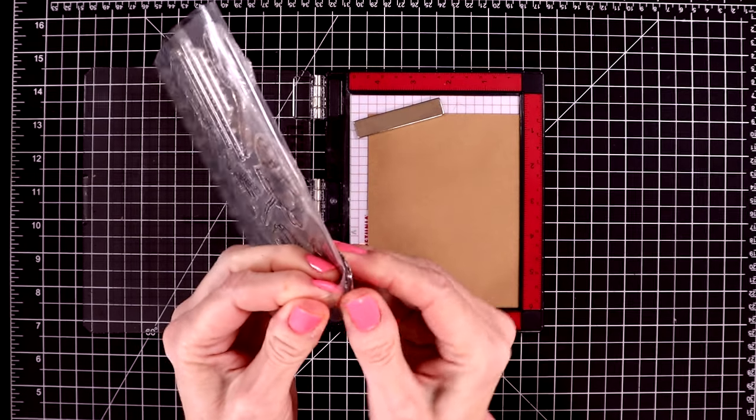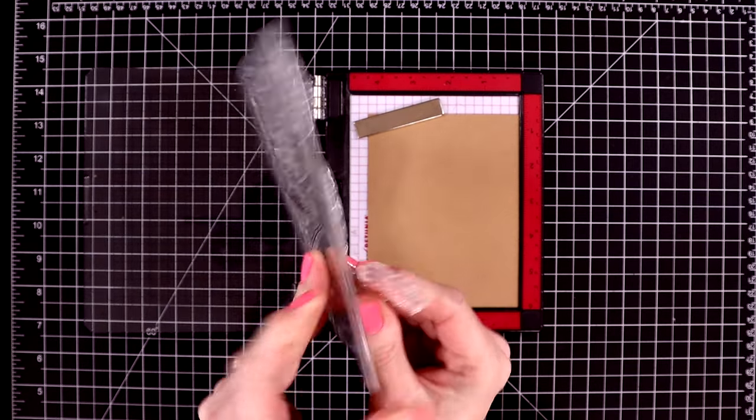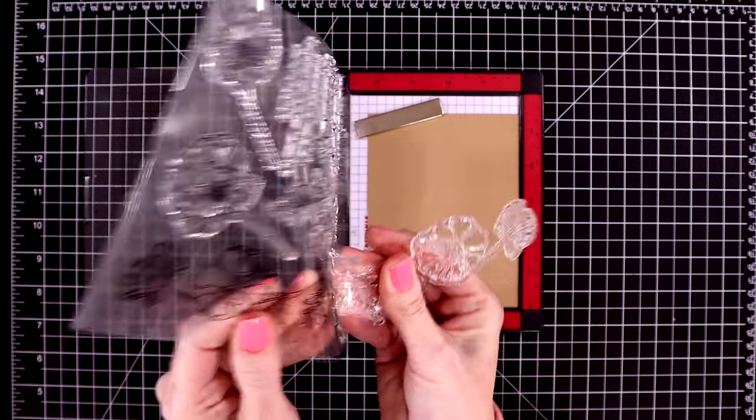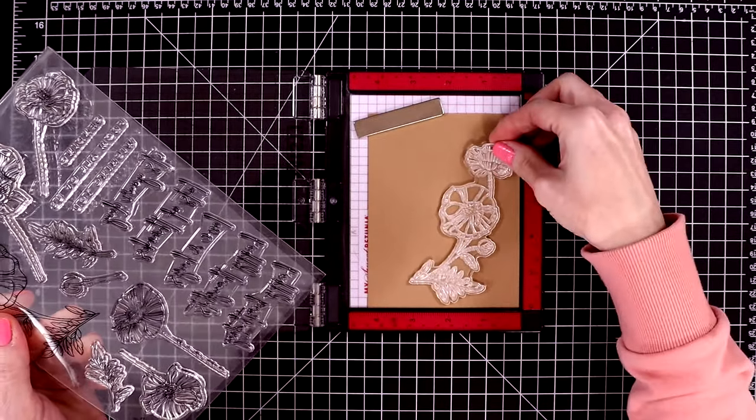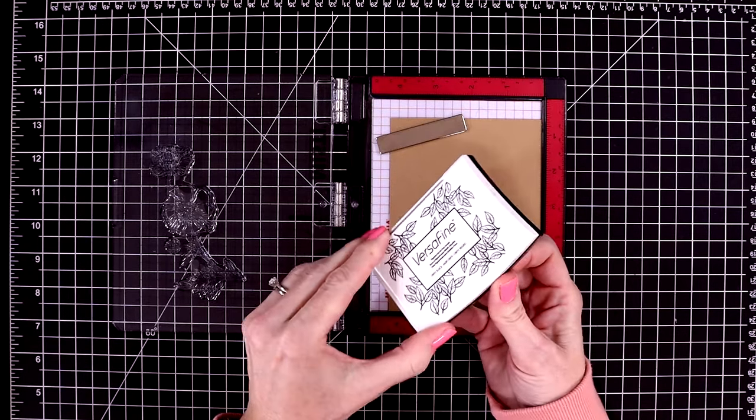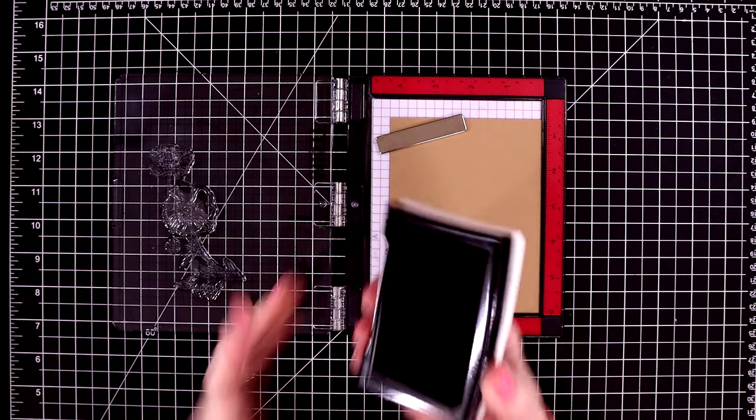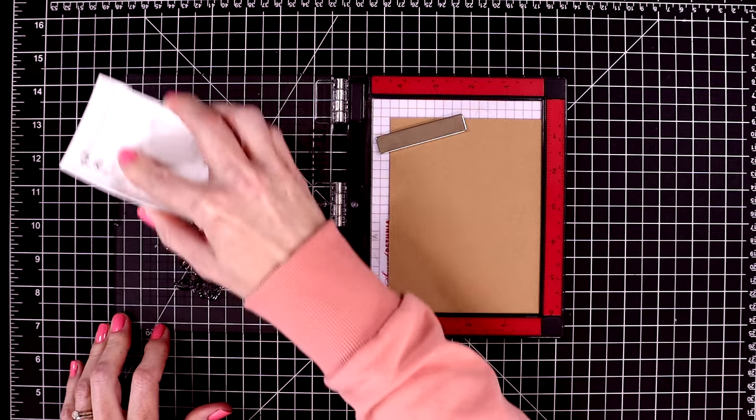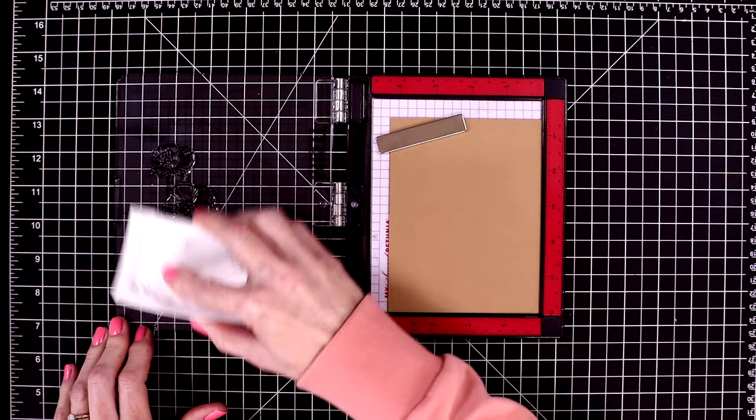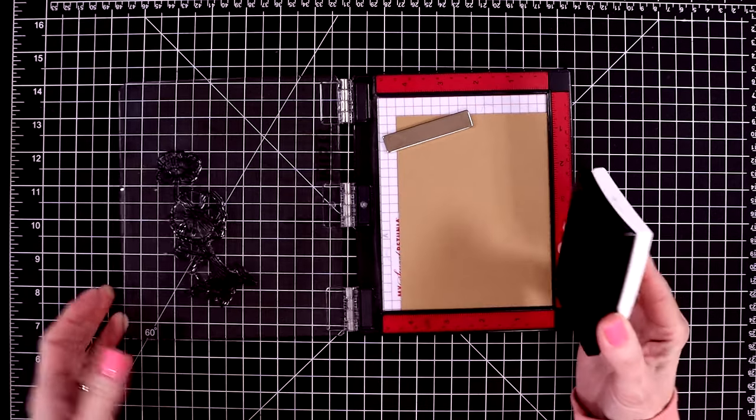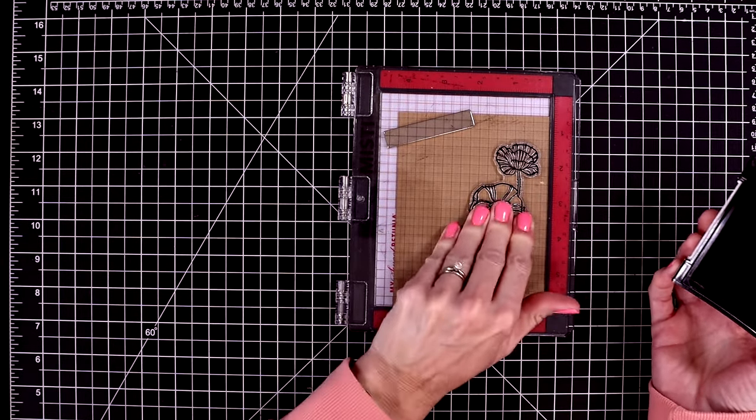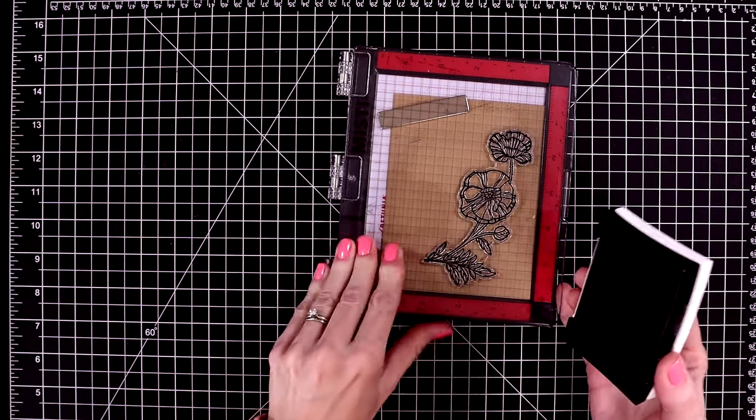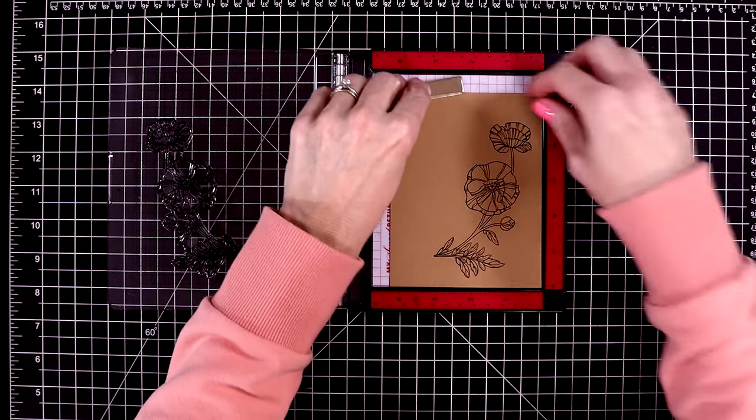I'll gently peel this off the acetate. And then I'll place this at the side of the paper. I'll stamp it out with some VersaFine Onyx Black ink. This ink is great for colored pencils or watercolors. And I'm going to leave the stamp on the door of my Mini Misti so I can stamp it out again once I'm done with my coloring.